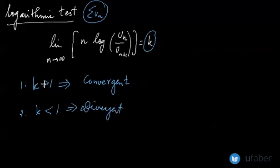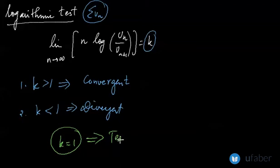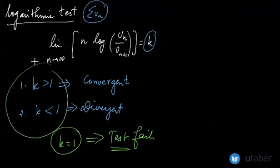And again, when the value for k becomes equal to 1, this test also fails. Now we have seen that the conditions for convergence or divergence are the same for all the three tests: that is D'Alembert's, Raabe's, and logarithmic, and they fail at the value equal to 1.